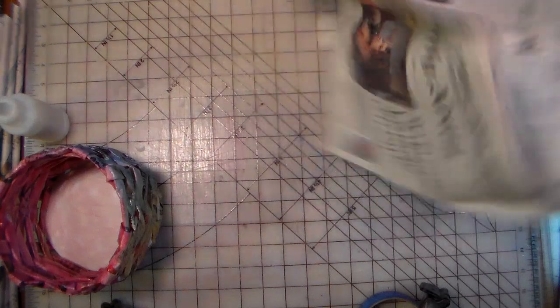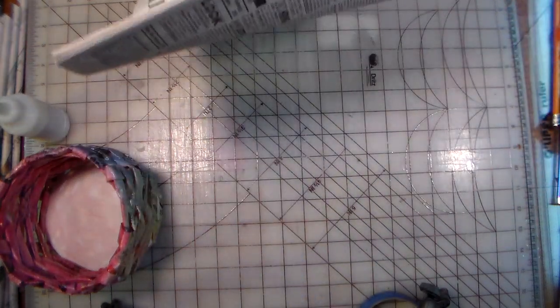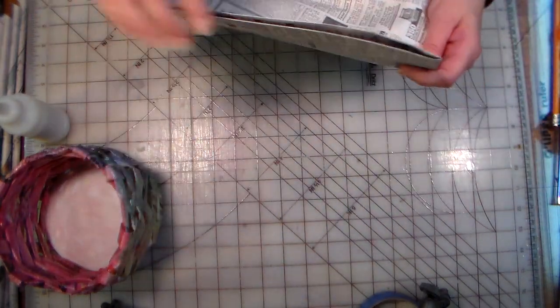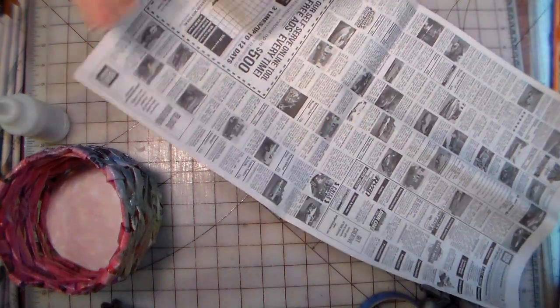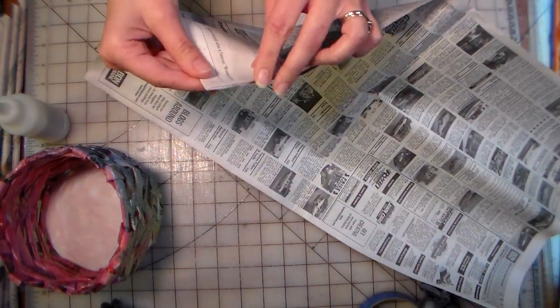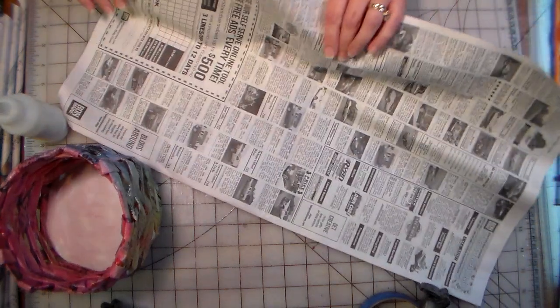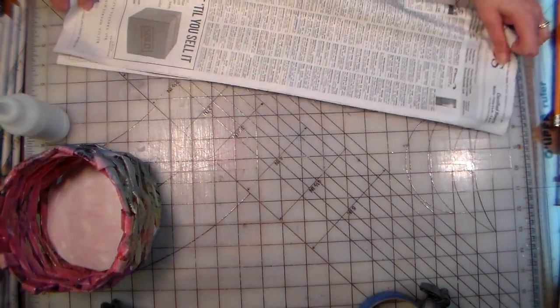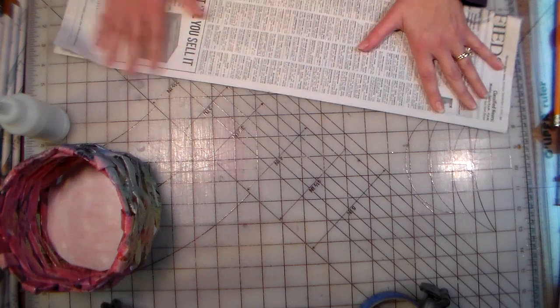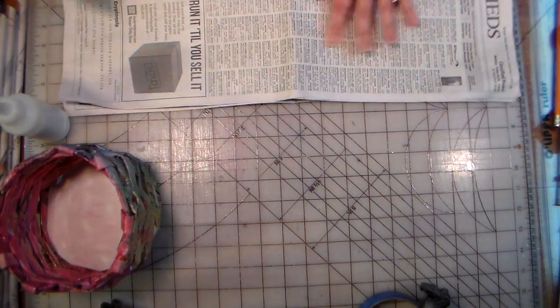Start by opening up your newspaper. You'll want to take one of the signatures out, which is just basically a folded clump of paper. Open it up, and we've got several sheets here, but the cool thing is we can cut many of these sheets at once because newspaper is really thin. What you want to do is fold this piece in half, and you'll end up with a stack of paper that's about six inches wide by almost two feet long.